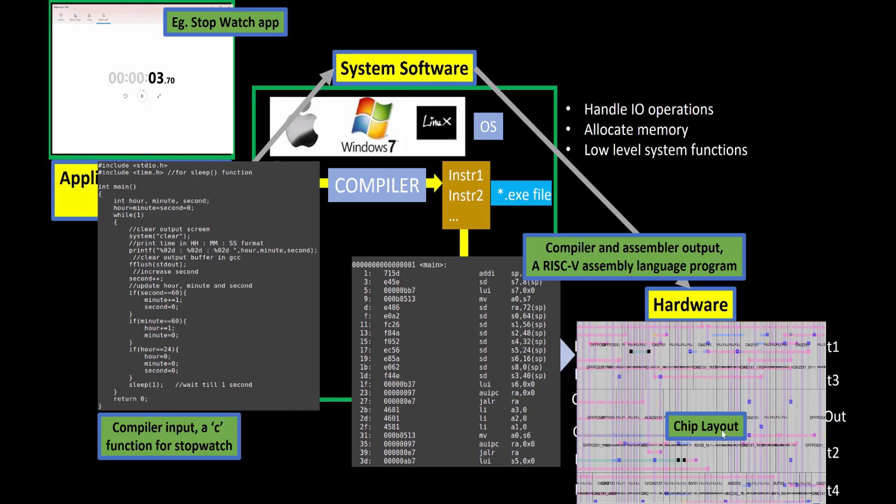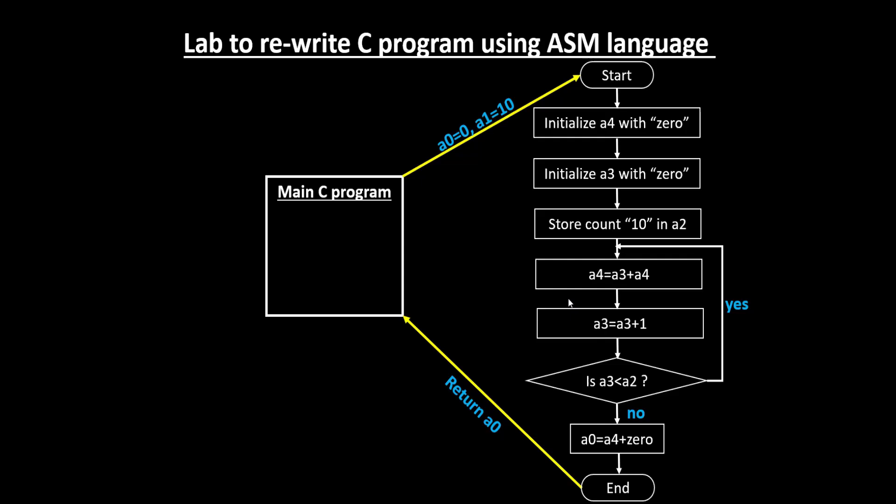This particular binary numbers enter into your chip or enter into your chip layout and accordingly the functions are getting performed over here and you will see the stopwatch behaving in the way it is expected to behave. So the algorithm will look something like this.